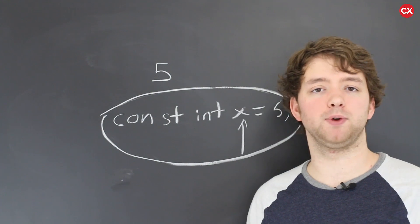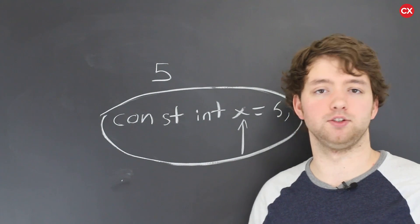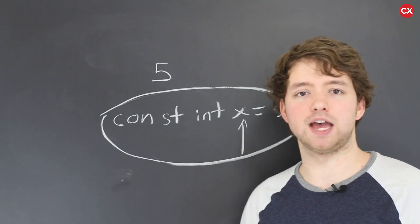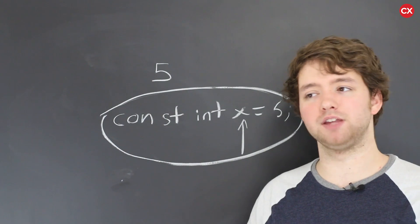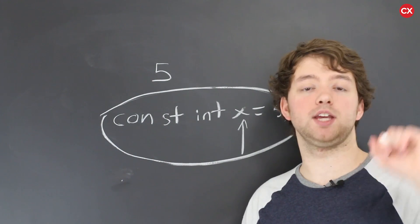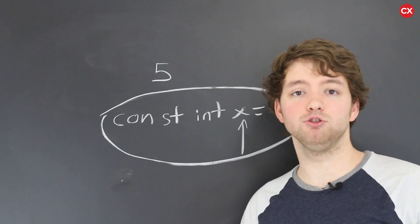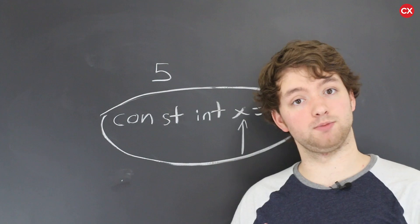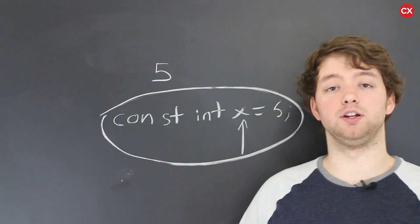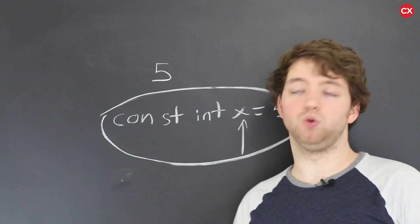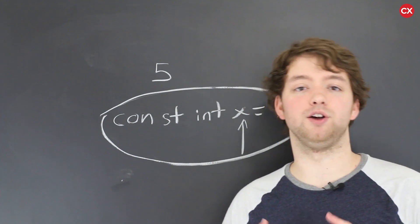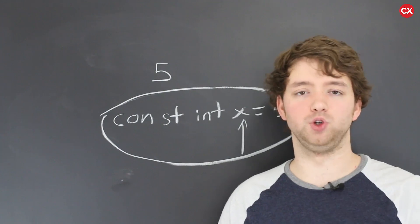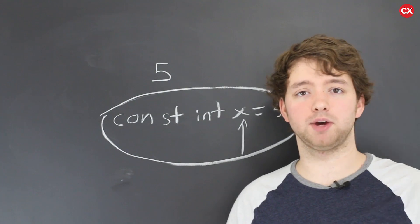Then we touched a little bit on operator precedence and associativity. Basically everything has a precedence group, and if two things with the same precedence are in the same expression, it's either evaluated left to right or right to left depending on the associativity. So that is kind of a crash course review of everything we talked about.